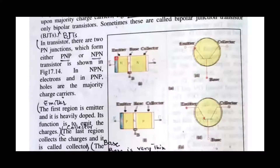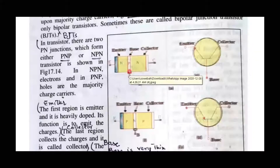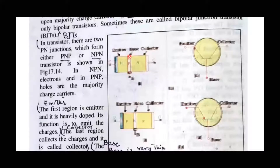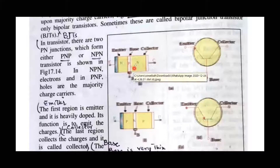The emitter is heavily doped — it is made from heavily doped silicon or germanium so it can eject a large number of charge carriers. In the center we keep the base very thin and lightly doped, so that electrons can easily transition to the other side.